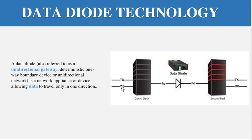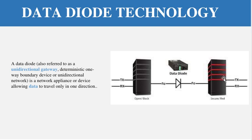For example, if data is coming from a source and traveling through the data diode to reach the destination, it can only go from source to destination. It cannot travel back from destination to source. The data diode is unidirectional — reverse data travel is not possible.